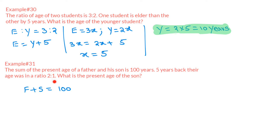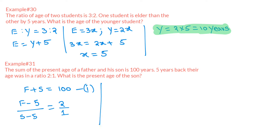Five years back, the father's age was F − 5 and the son's age was S − 5. Taking the ratio: (F − 5) / (S − 5) = 2/1. This is Expression 1. Cross-multiplying gives 2S − 10 = F − 5, which rearranges to 2S − F = 5. This is Expression 2.